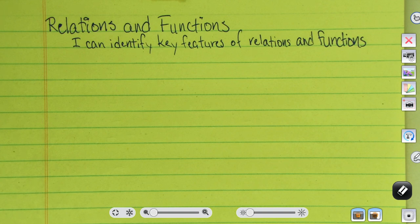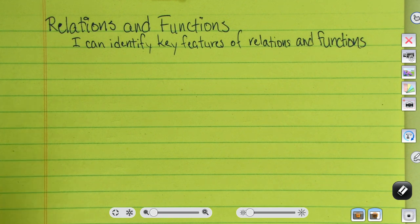We want to be able to identify some key features of relations and functions, and in order to start out by doing that, we've got to start out with a few definitions, and you'll need to write these down.